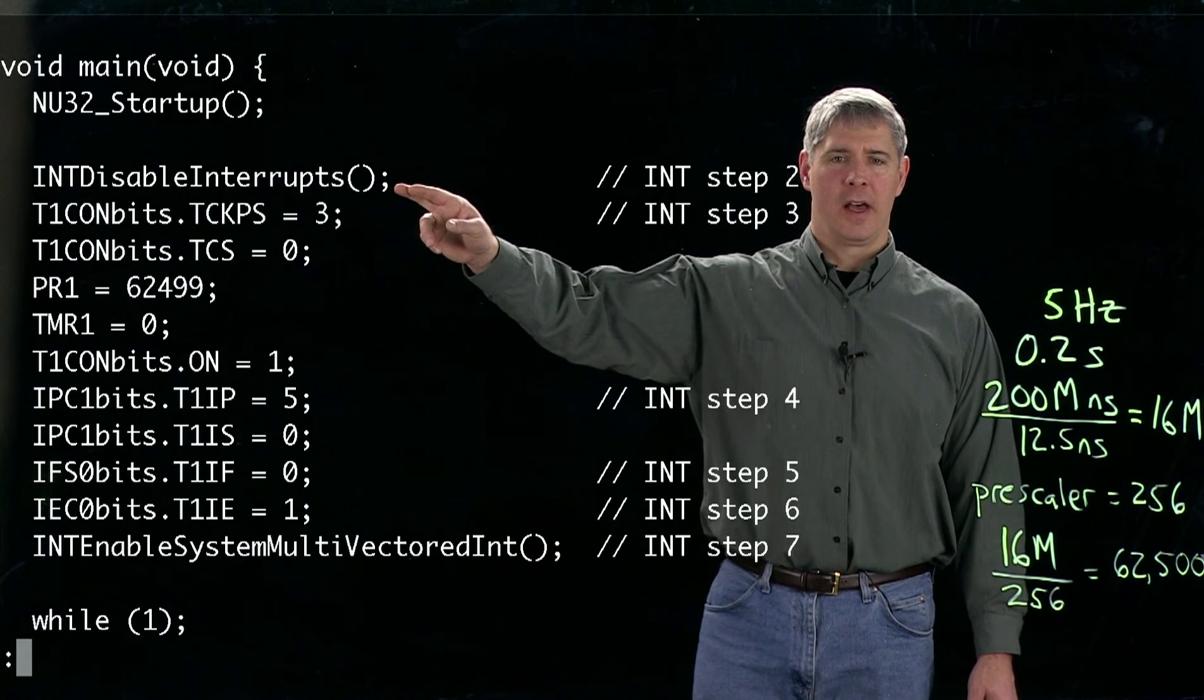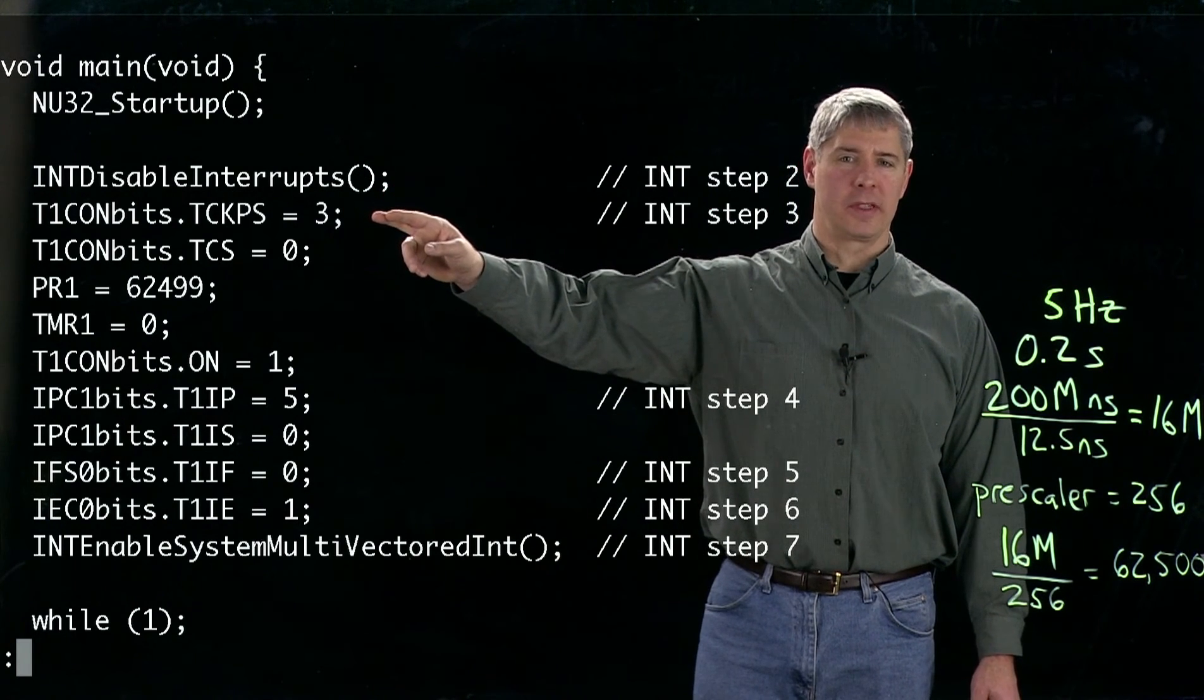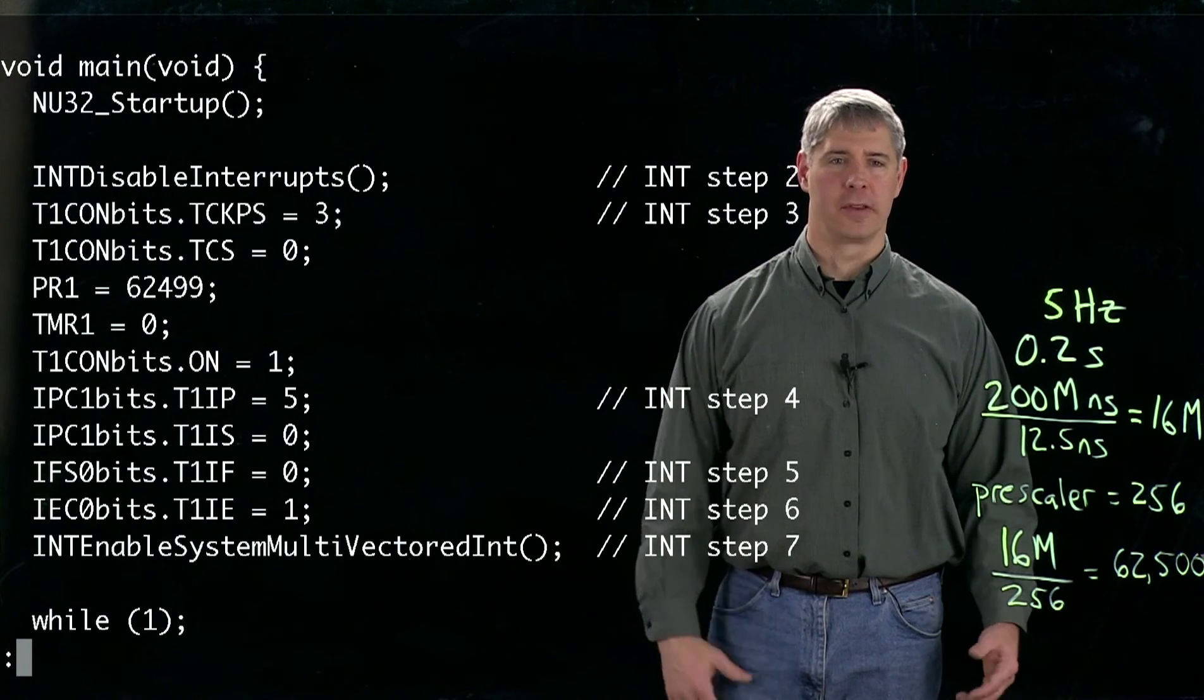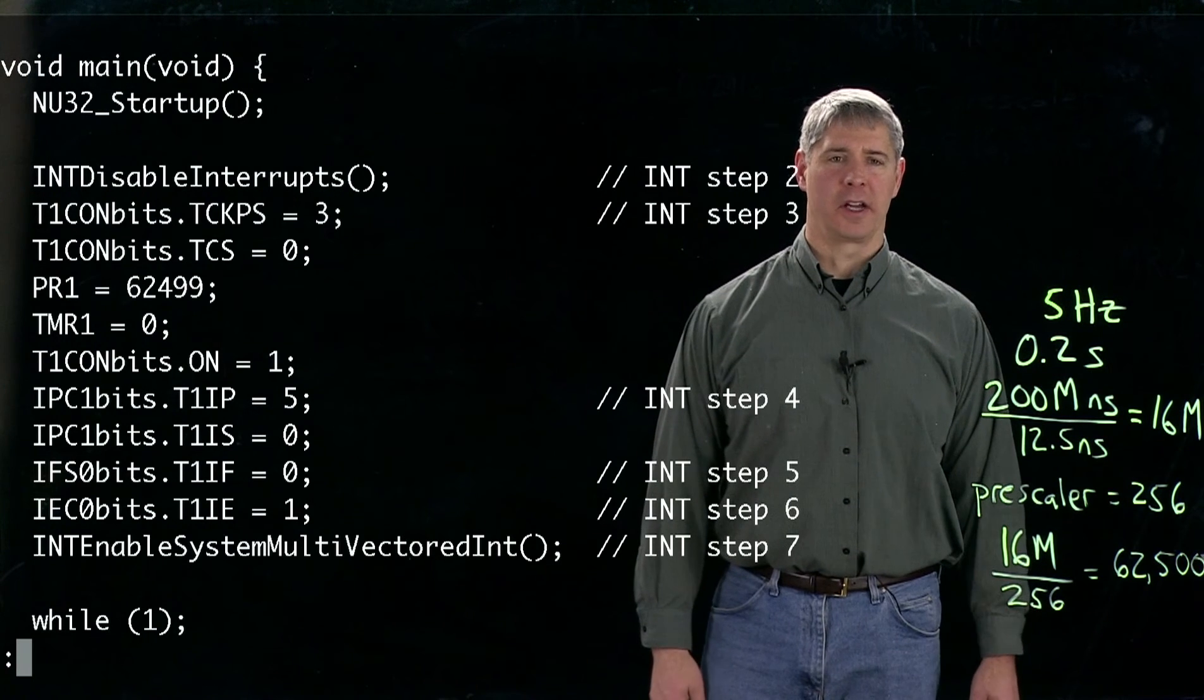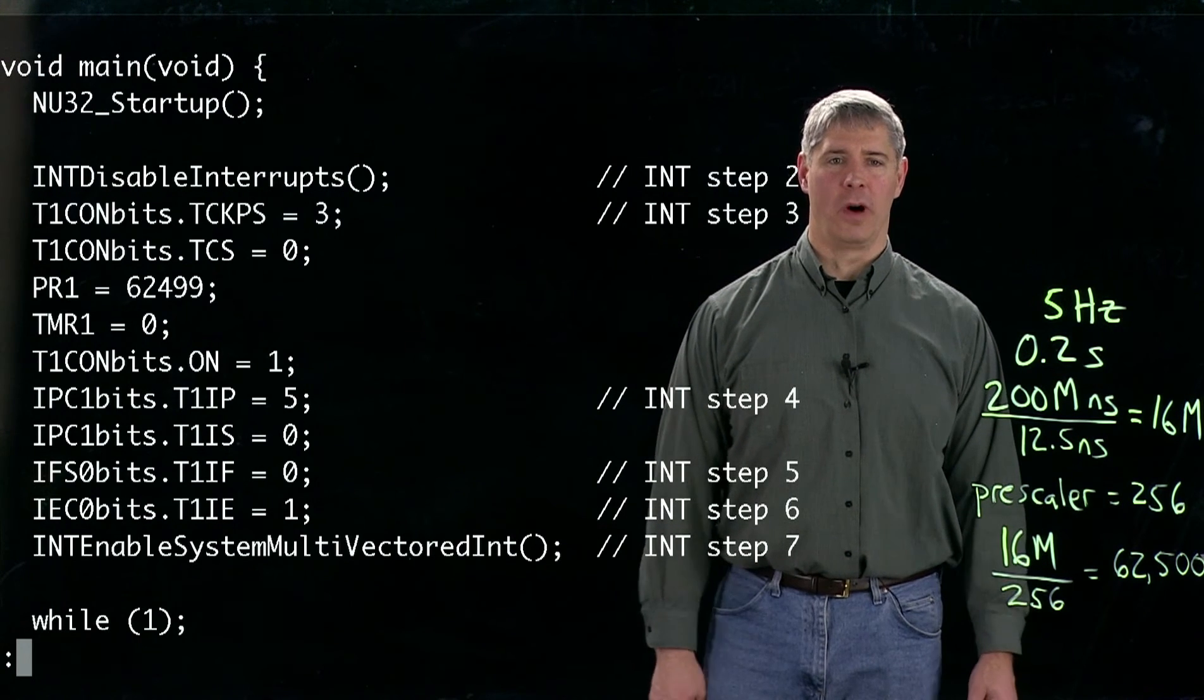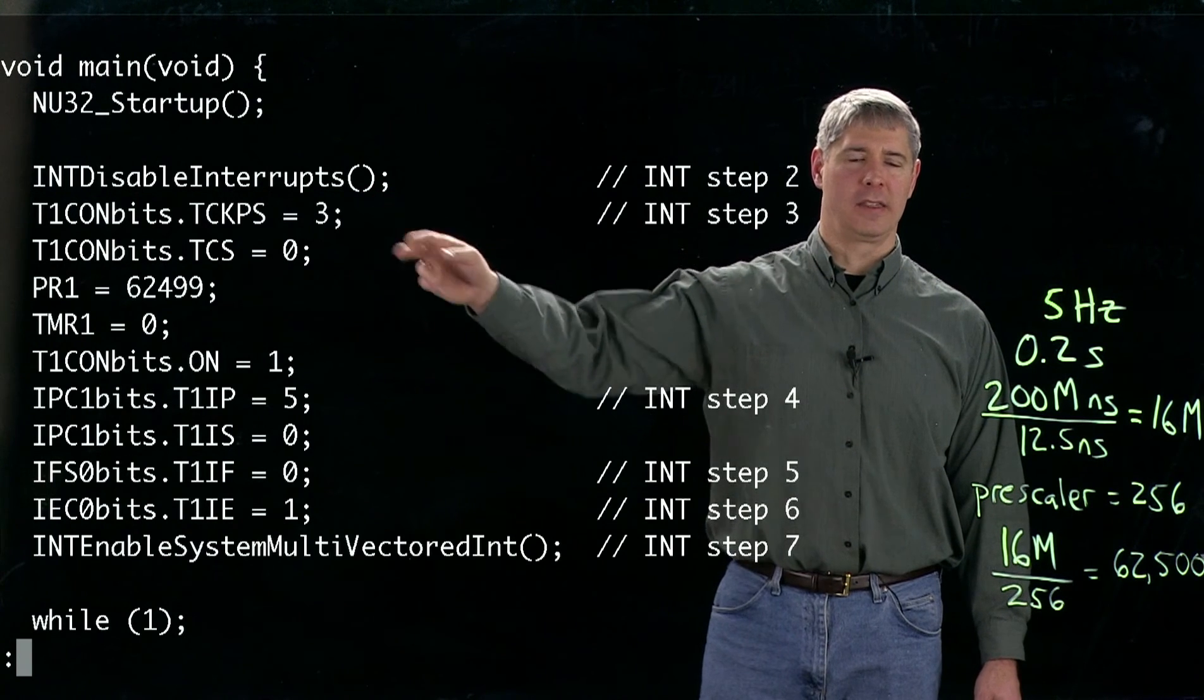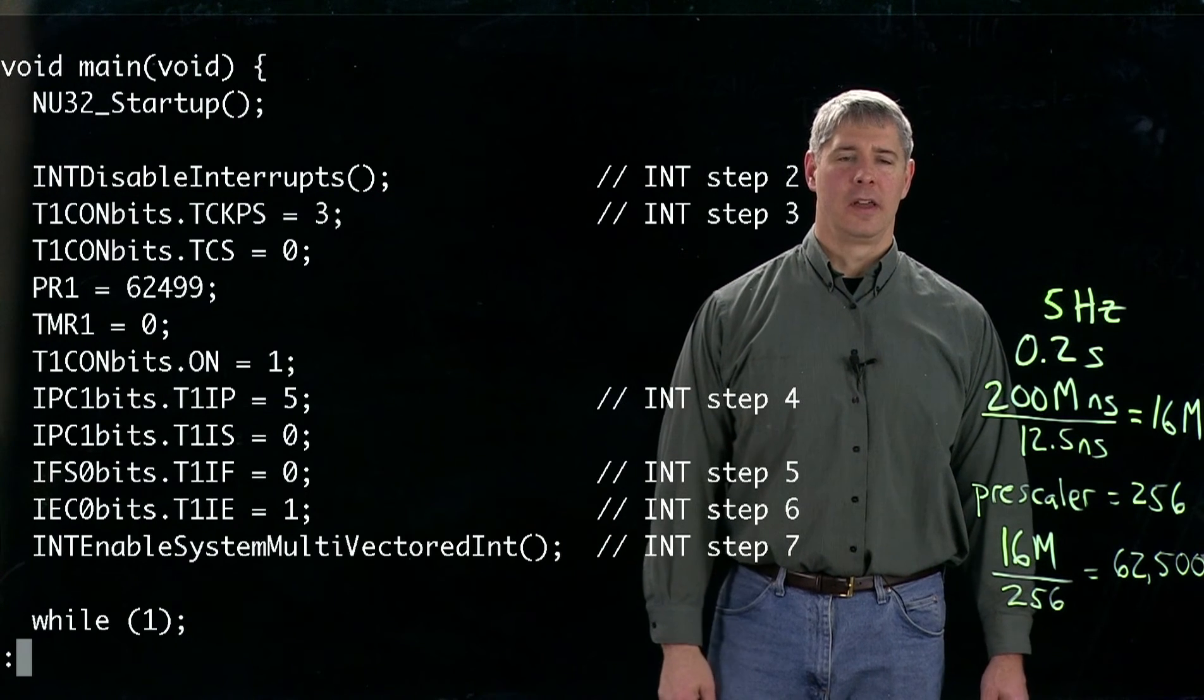So again, the first thing we do is we disable interrupts. The next thing here, we're going to set the pre-scaler of timer one. So remember, step three is setting up the peripheral or the device to generate interrupts on the conditions that we want. So what we're